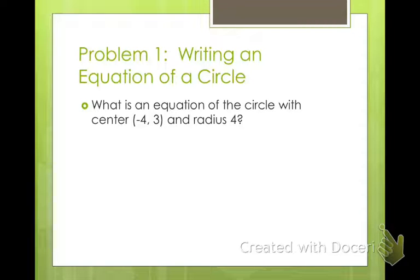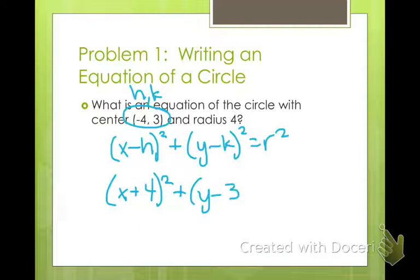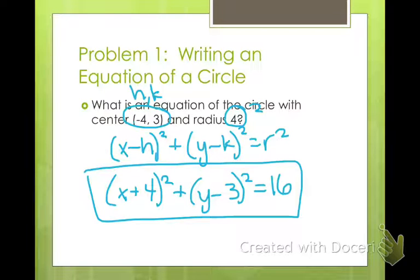Let's write an equation of a circle. Here we're given the center and a radius. If we use our formula, (x - h)² + (y - k)² = r², this point right here, the center, is our (h, k). So it's x minus a negative 4, so it becomes (x + 4)² plus y minus 3 squared, and our radius is 4. We square 4, and 4² is 16. This is your equation of a circle with center at (-4, 3) and radius of 4. Pretty simple.